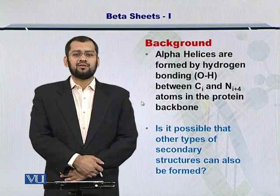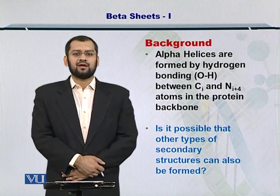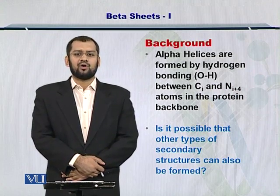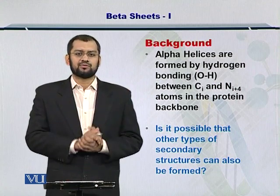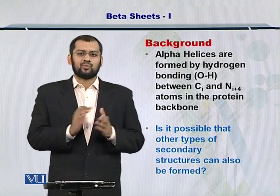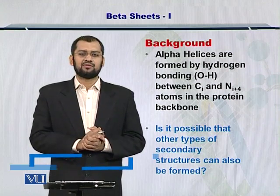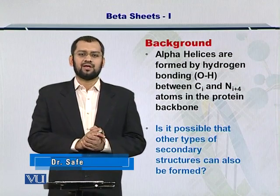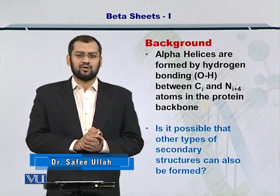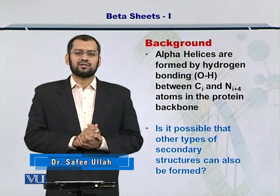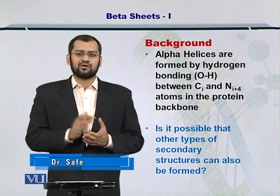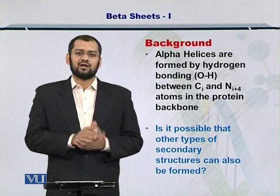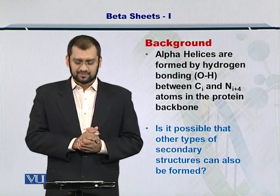You know that alpha helices are formed when the C and N termini make hydrogen bonds together, and they must be at a distance of at least 4 residues. So once such a situation arises, there is a chance that alpha helices will be formed. Now, what other types of structures may also be formed as a result of different interactions other than the one just mentioned?